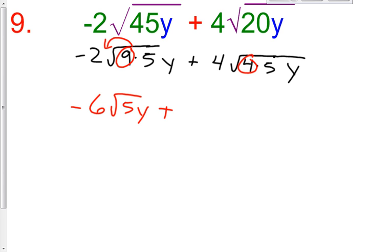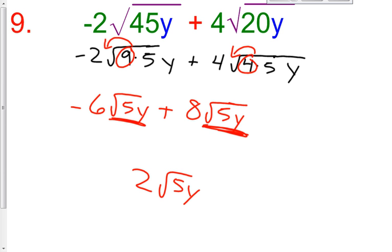Plus, this 4 can come outside the radical. 4 times the square root of 4 which is 2. 4 times 2 is 8 square root of 5y. So, a negative 6 square root of 5y and 8 square root of 5y. Your radicals are exactly the same. So, you could add up the coefficients to give you 2 square root of 5y. The answer to number 9 is 2 square root of 5y.